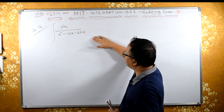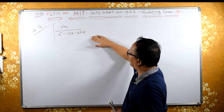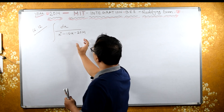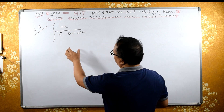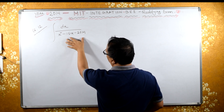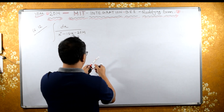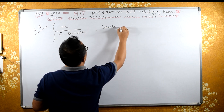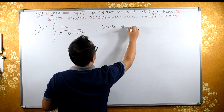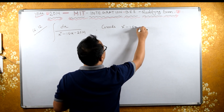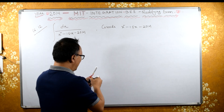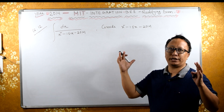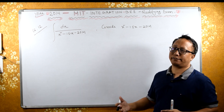Look at the denominator — we need to make a perfect square. Let's consider this denominator part and see how it works. I will go very slowly, explaining every step — multiplication and addition — so that everyone can understand.